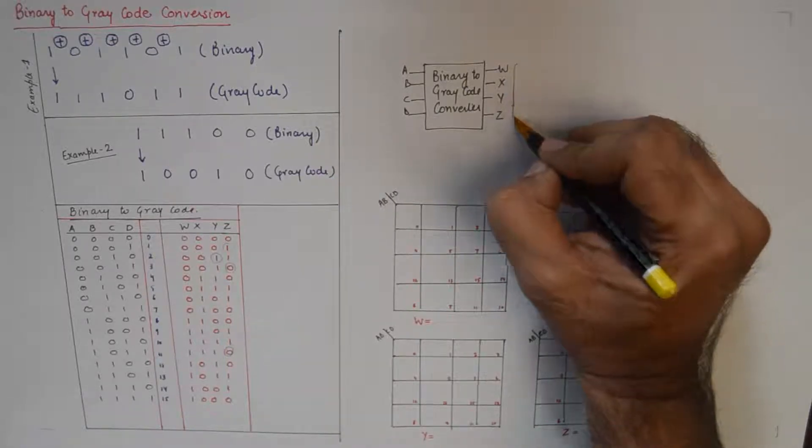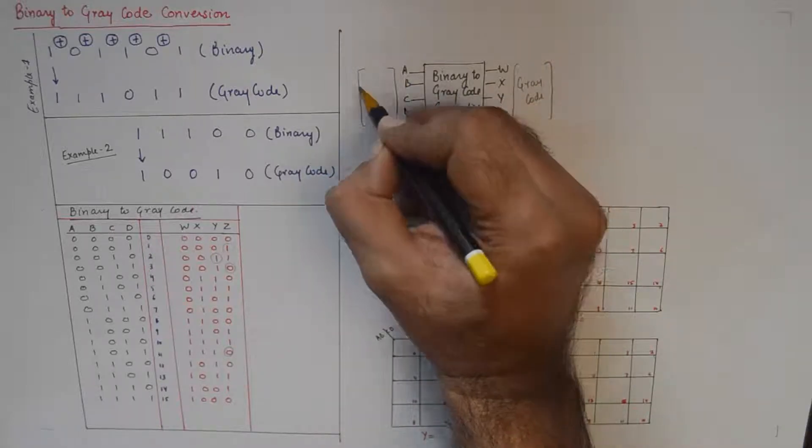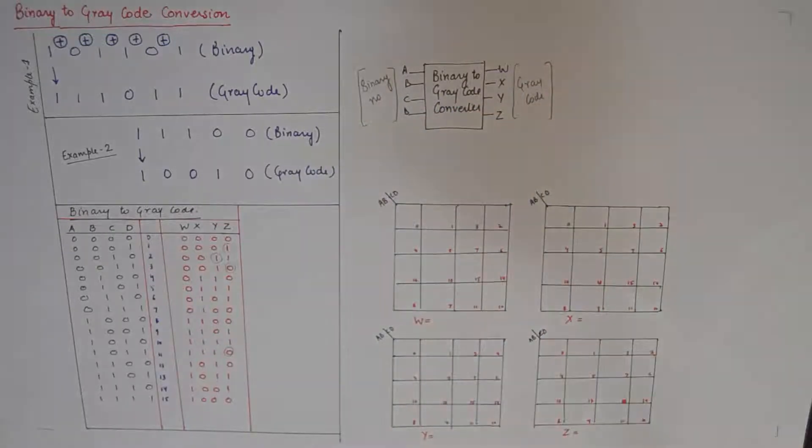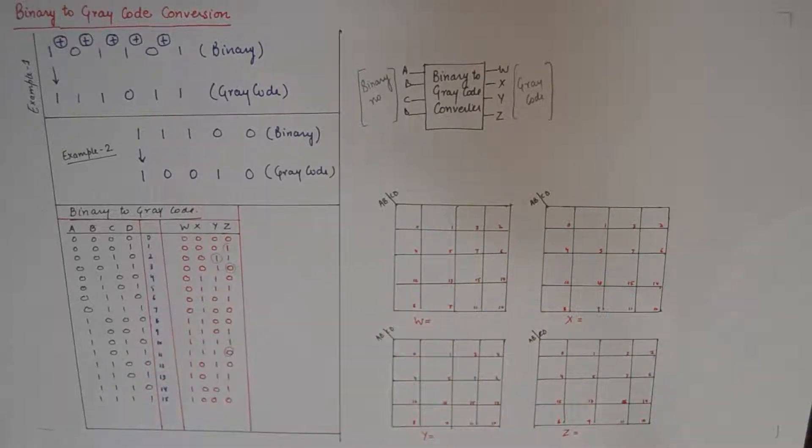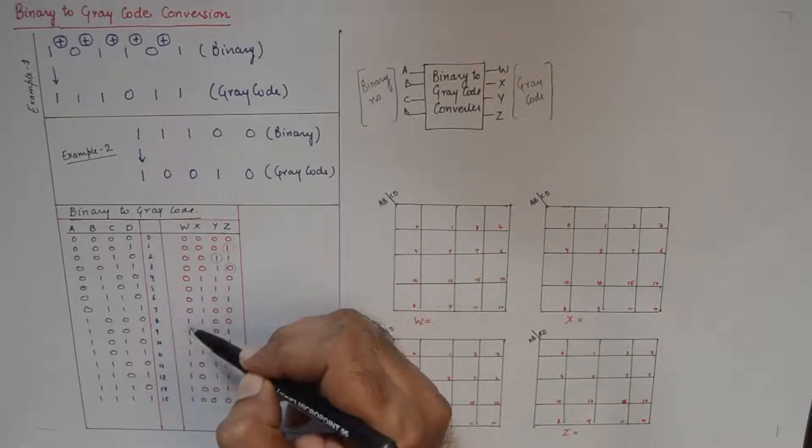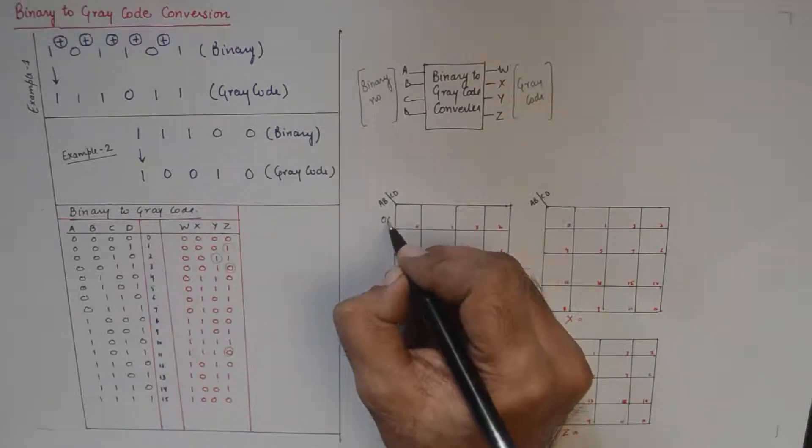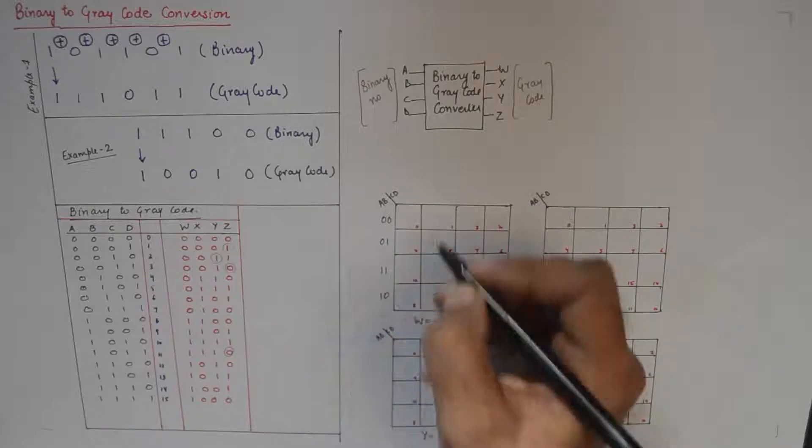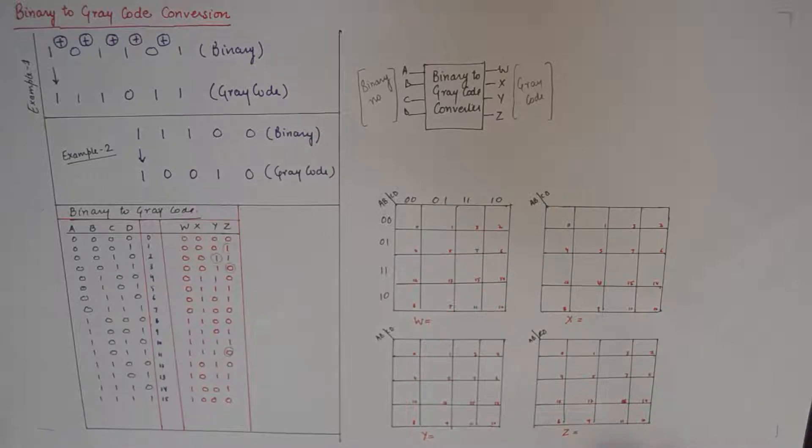Because now we are going to find out the values of the outputs w, x, y, z which will represent gray code in terms of its input which will be a binary number. While we do that, the first step is of course populating the truth table, the second step is making the k-maps for each of these outputs. Now we have a task of finding w in terms of inputs a, b, c, d. So let's fill in - we know that w is 1 from 8 to 15. So what I'll do is have marked here all the boxes as the equivalent decimal numbers.